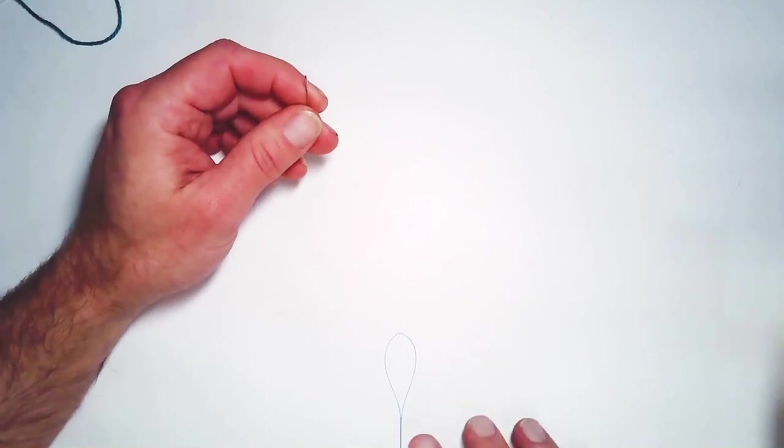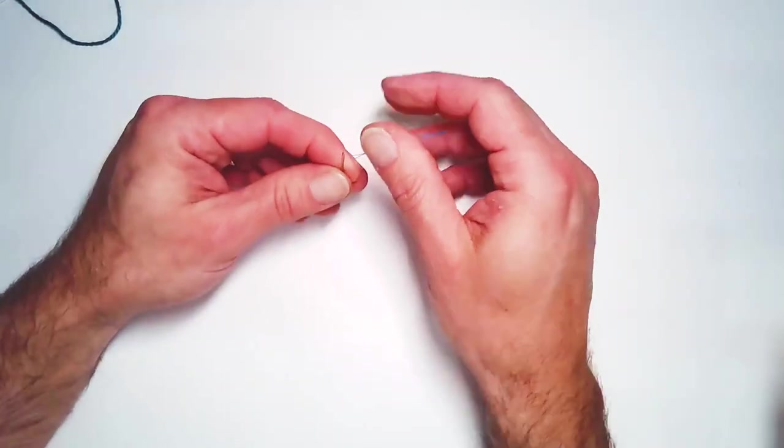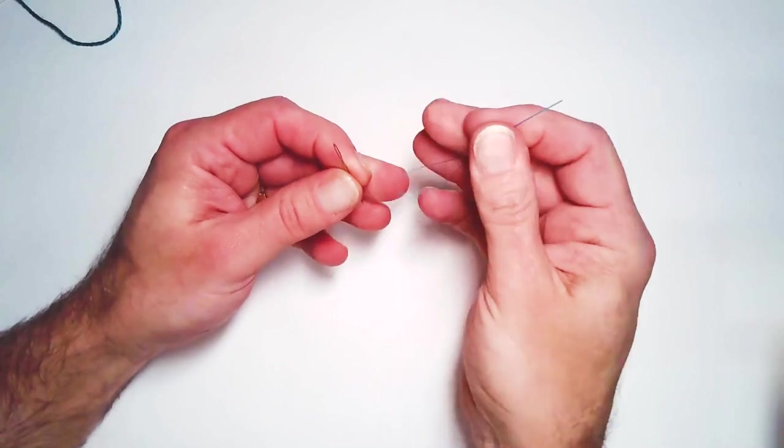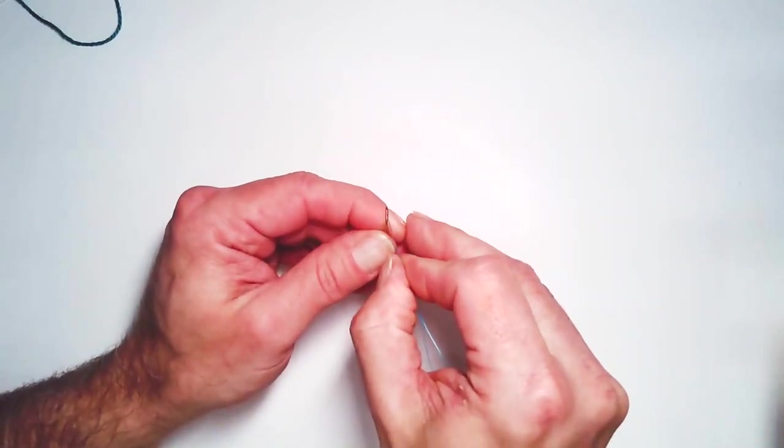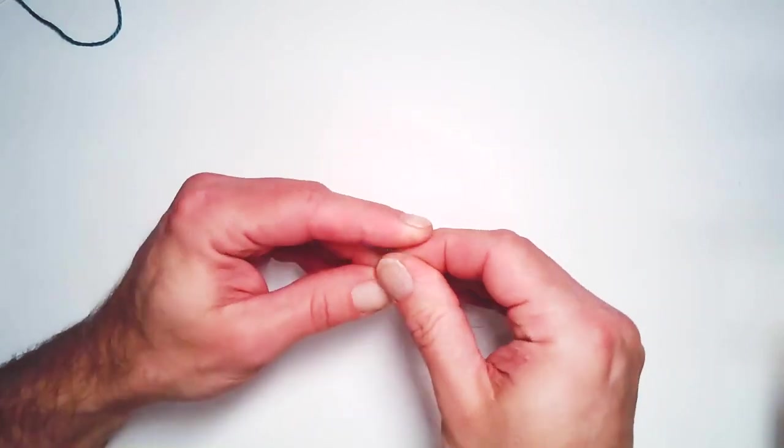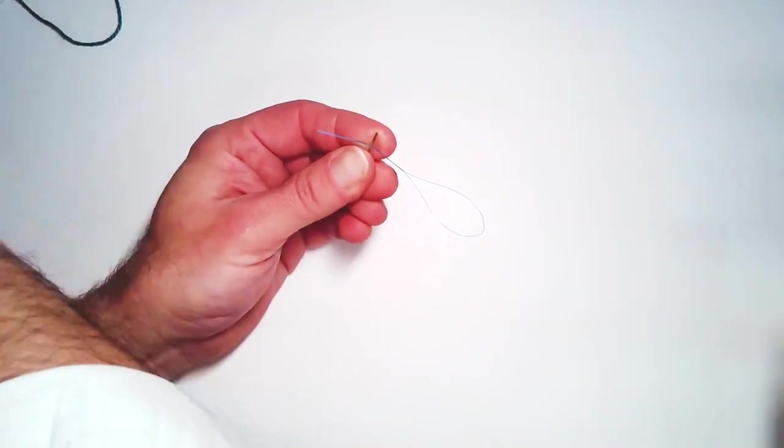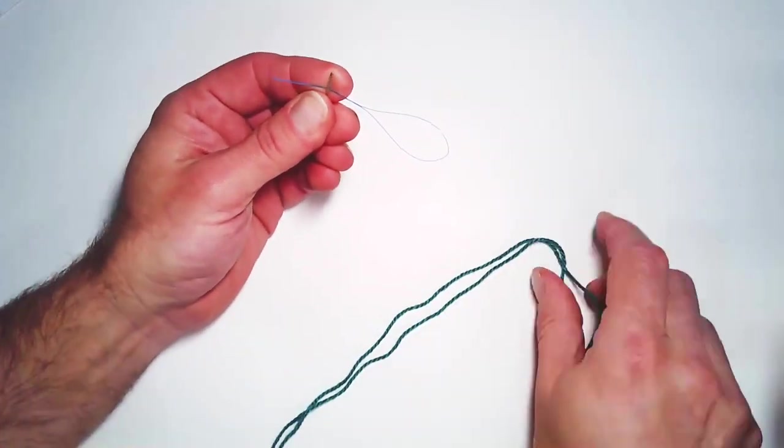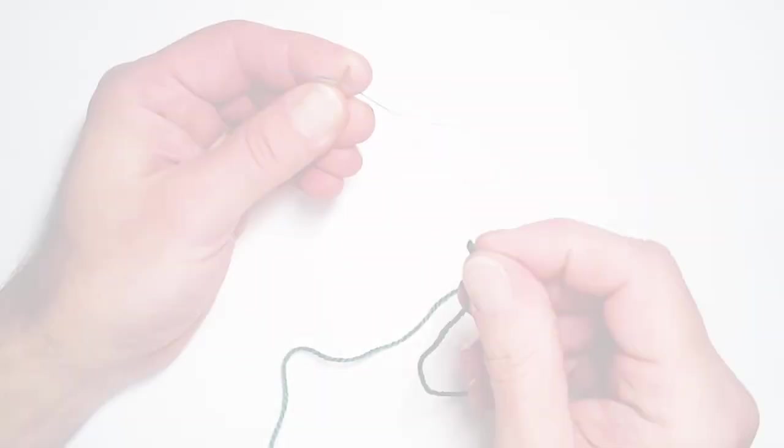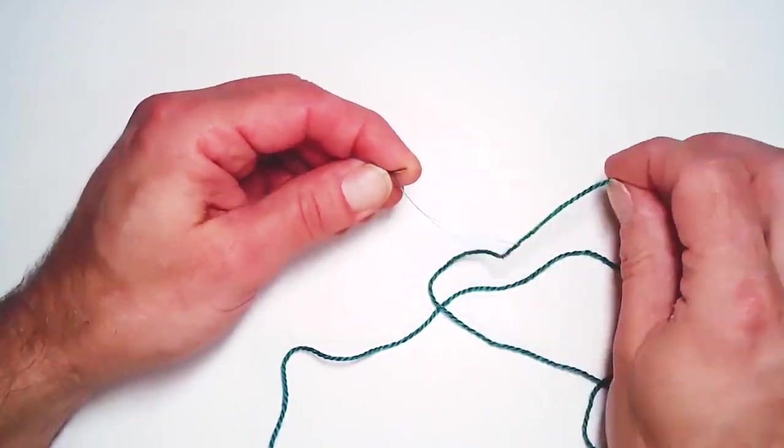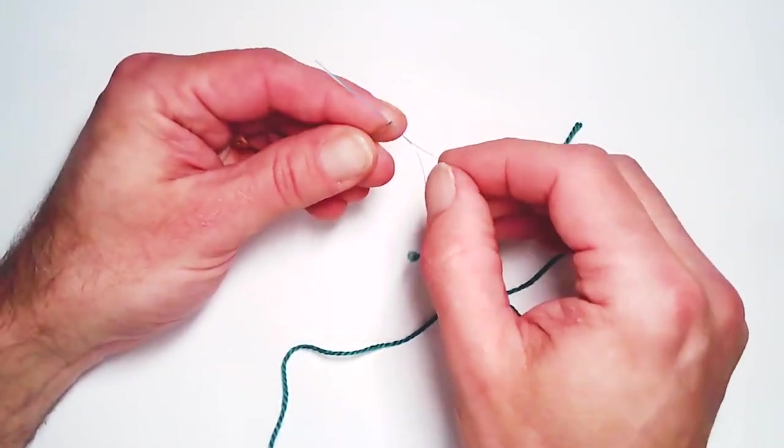Like any needle threader, I've got to put my glasses on. The first thing you want to do is insert the needle threader into the eye of the needle, and then you're going to take your thread. I'm using this silk and ivory.